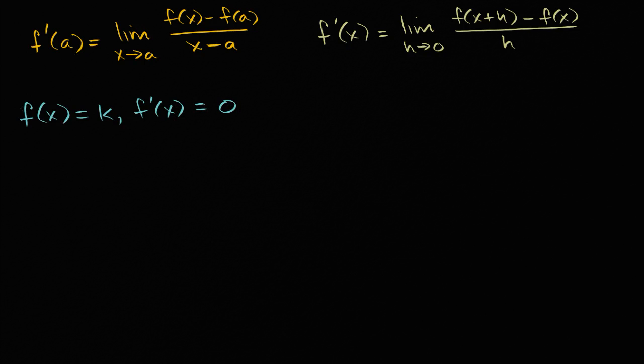Why does that make intuitive sense? Well, we could graph it. If that's my y-axis, that's my x-axis, if I wanted to graph y equals f of x, it's going to look like that, where this is at the value y equals k. So this is y equals f of x.